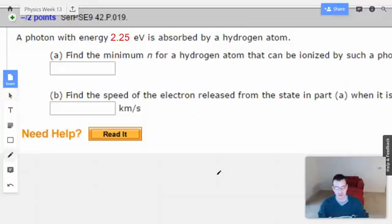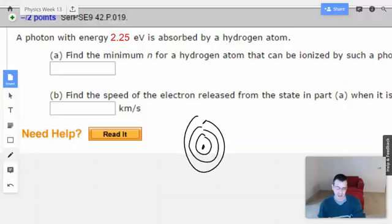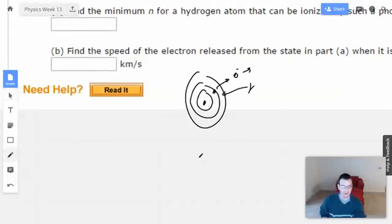Alright, so I'm going to start off by maybe drawing a picture. I don't even know what to draw. I've got a bunch of energy levels, you have an electron, you have a photon comes in, hits it, and it's just enough to ionize this electron. Okay, seems reasonable. Not very helpful, but reasonable.